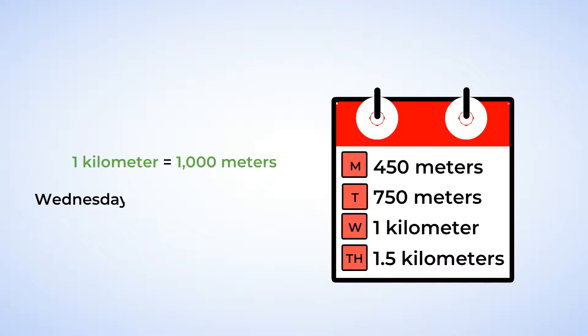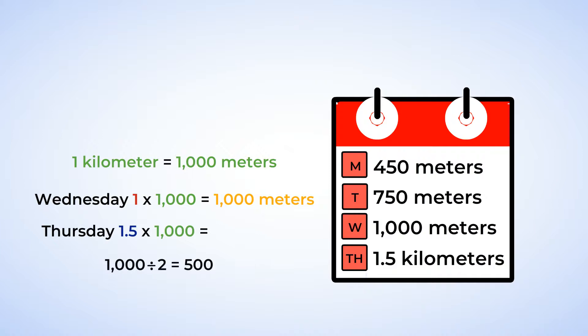So on Wednesday, 1 multiplied by 1,000 is 1,000. He had 1,000 meters on Wednesday. And now we need to multiply 1 and a half times 1,000. Well, we know that 1 times 1,000 is 1,000. And we also know that half of 1,000 is 500. And that means 1 and a half times 1,000 is 1,500.